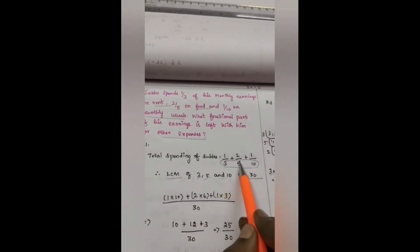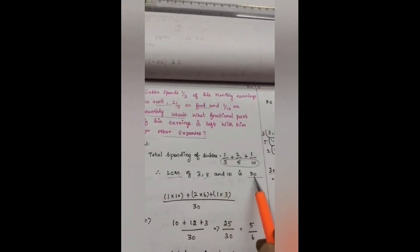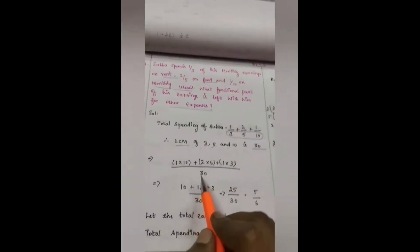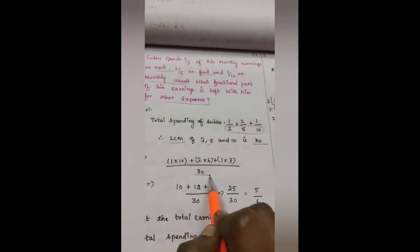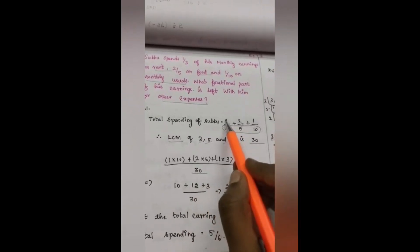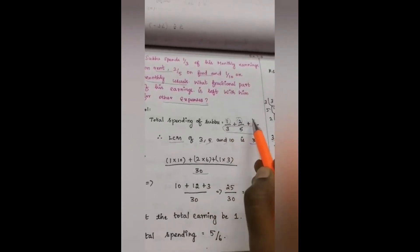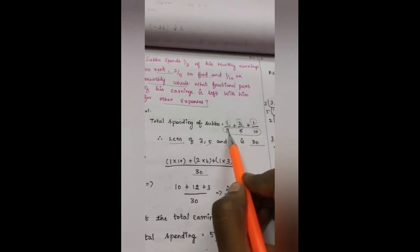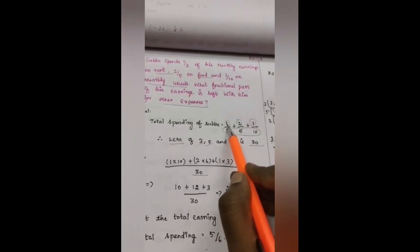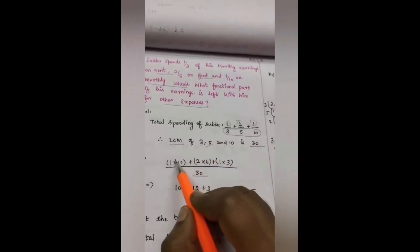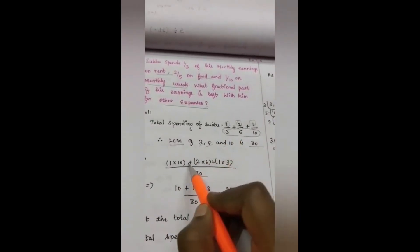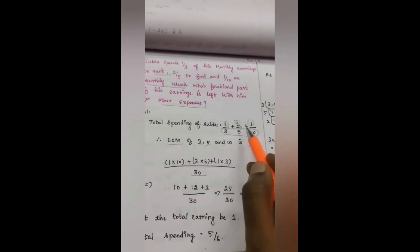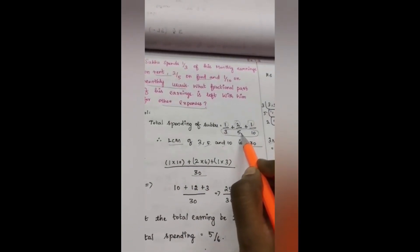Now, I'm going to change the given denominators as per our LCM answer. What is our LCM answer? 30 is our LCM answer. So likewise I'm going to change the numerator part. See here we have 3. With the help of 10, we will get 30. So, 1 into 10, plus...